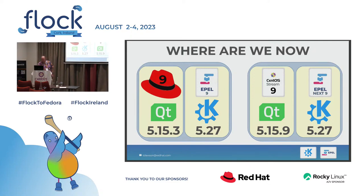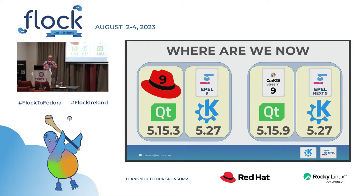EPEL 9 next is currently — well, actually starting next week — I'll be updating from Fedora 38. We go into EPEL next so that we can stage things: when RHEL 9.3 comes out, everything's already staged, we've got the build dependencies, everything's tested, and then we can just sync the dist repos over to EPEL 9, build them. It's nice, quick, and easy, with fewer surprises — though there's always a surprise. But it's a lot better than if we didn't do it.